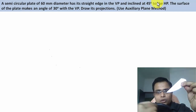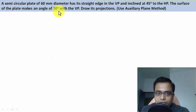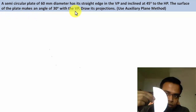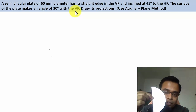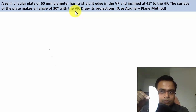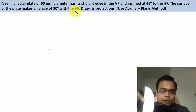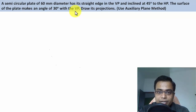The straight edge makes an angle of 45 degrees with the horizontal plane. The surface of the plate makes an angle of 30 degrees with the VP — extremely important. This angle that the surface makes with the VP can only be seen from the top, so we've got to start with step one: the initial position assumption.